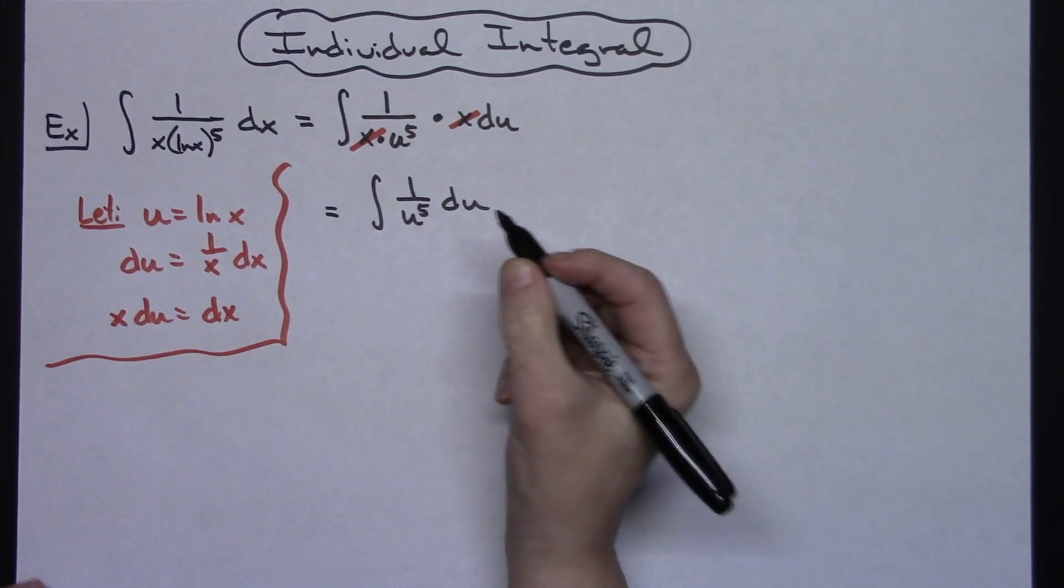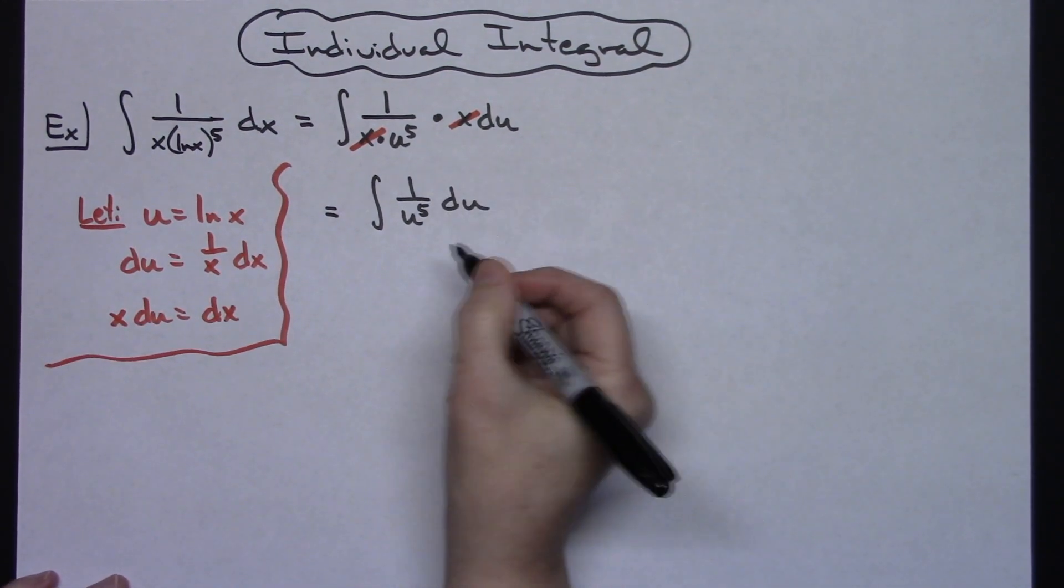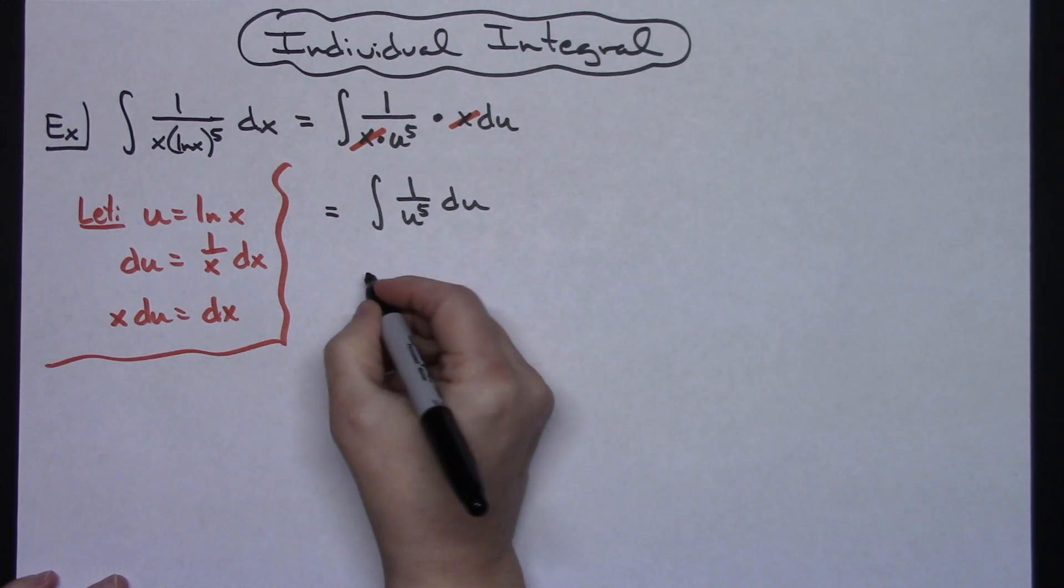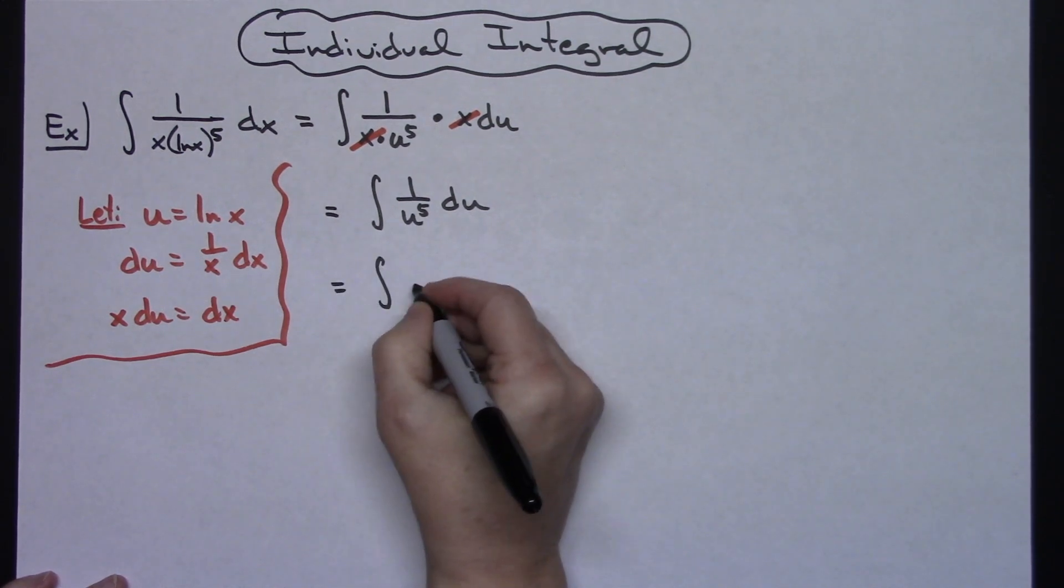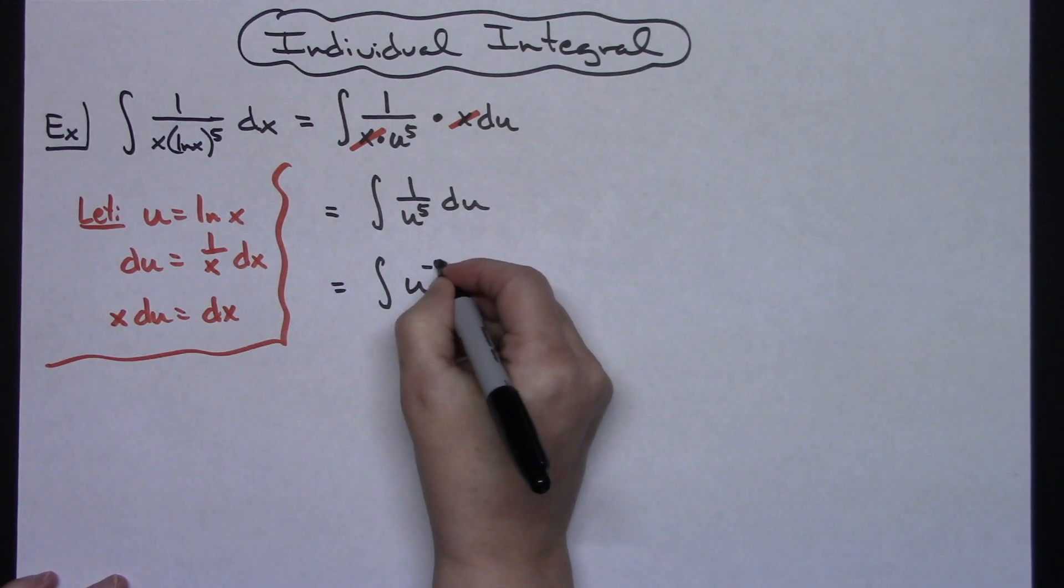Now to be able to integrate this we need to use our laws of exponents. We'll move that up to the top and make that a negative 5. So then we'll have the integral of u raised to the negative 5 du.